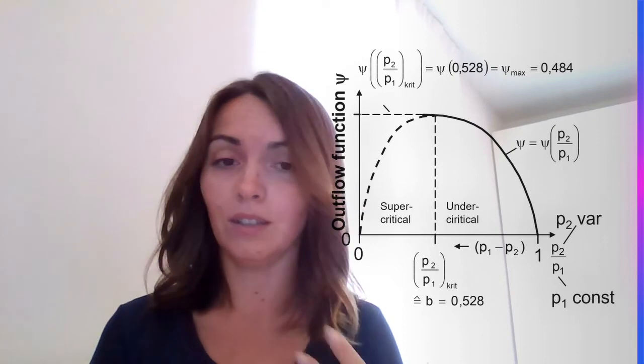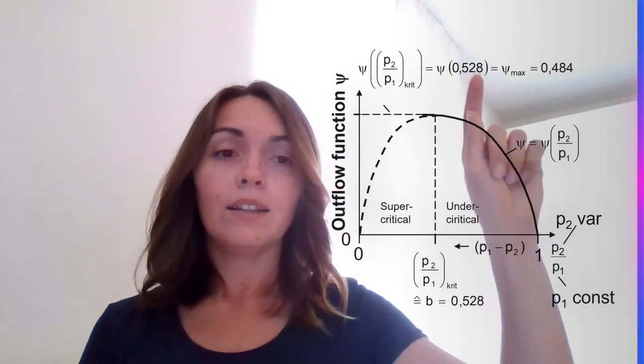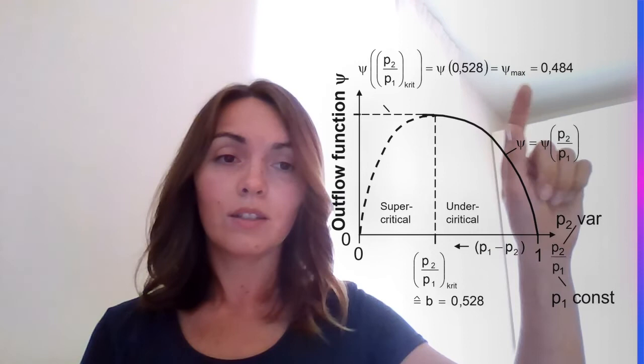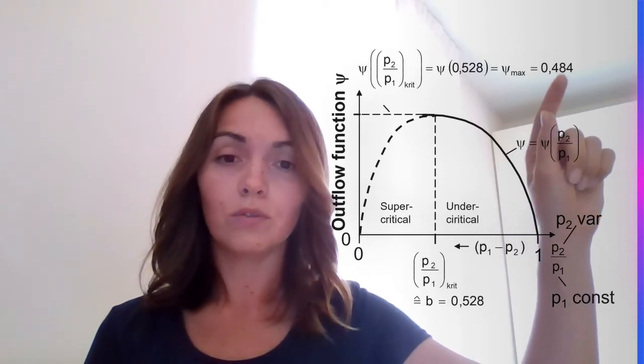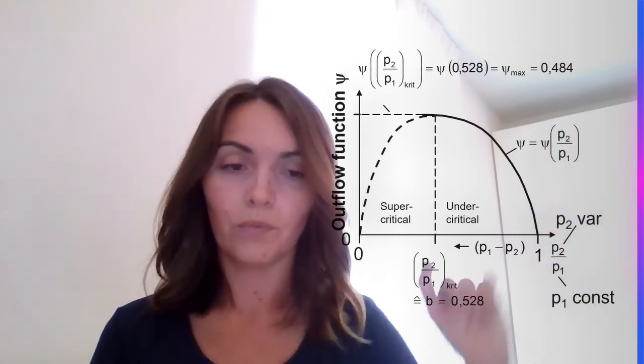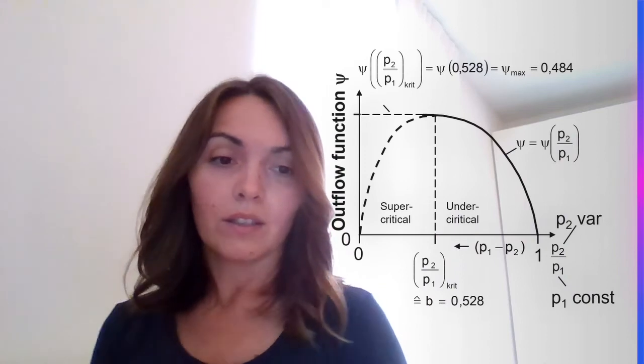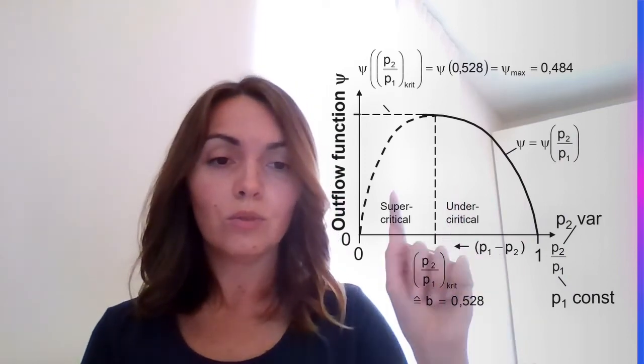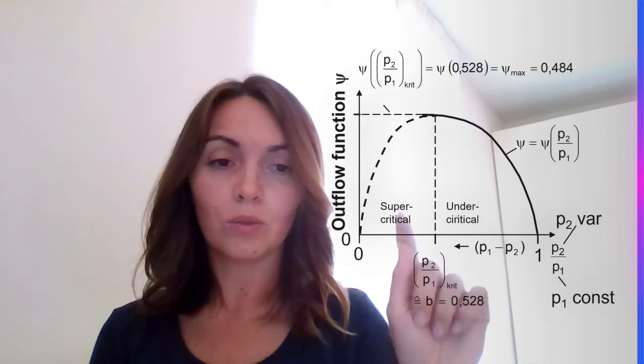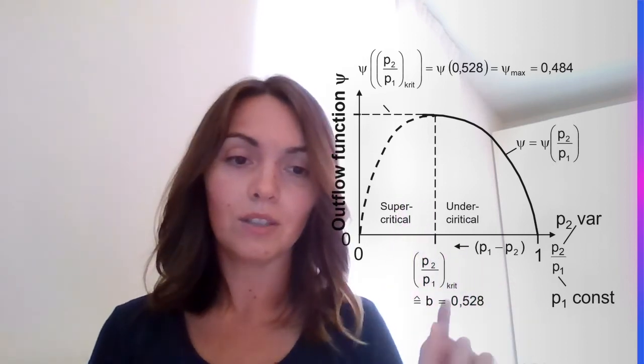We will talk about this in the next videos. And the maximum function from this is 0.484. So what does it mean? It means that we have two various areas here: we have the supercritical and undercritical areas here, one area where this function, the outflow function, is a constant, and another area where we need to calculate it.